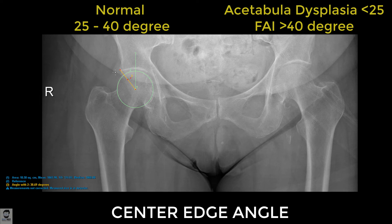The normal angle is 25 to 40 degrees. In femoroacetabular impingement, where there is excessive bone growth and the acetabular coverage of the femoral head is more than normal, the angle is more than 40 degrees. In acetabular dysplasia, there is less femoral head coverage and the angle is less than 25 degrees. So less than 25 suggests acetabular dysplasia, and more than 40 degrees suggests femoroacetabular impingement.